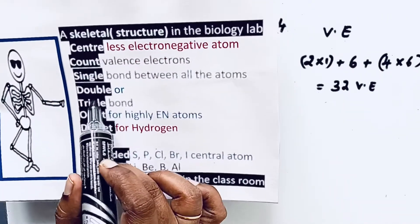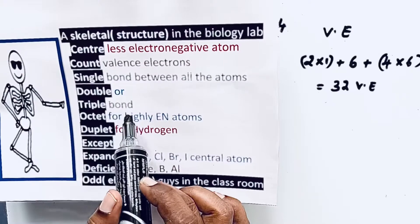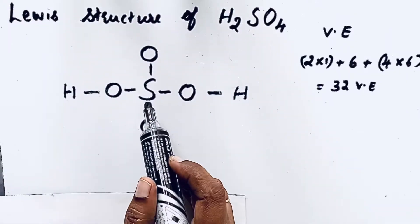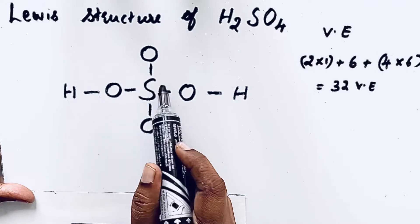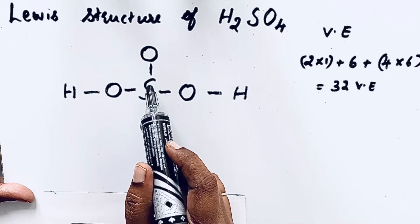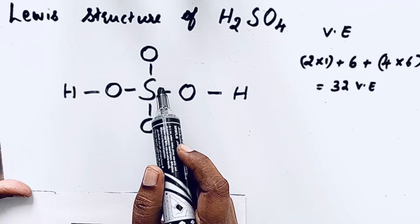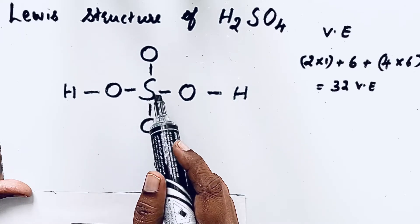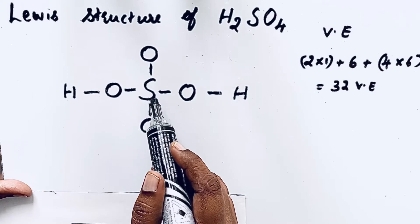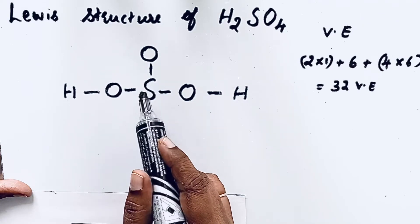Now the next one is double or triple bond around the center atom. Why are we putting double or triple bond? Because all the atoms in Lewis structure try to get that octet configuration. Octet means eight electrons to maintain the stability. So sulfur, whether it will get double or triple bond around the central atom.